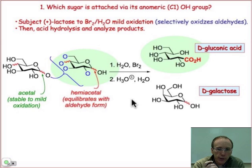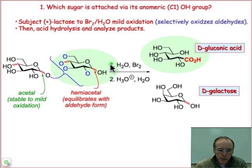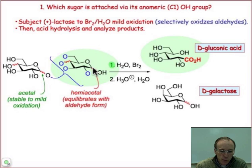Now we're ready to elucidate the structure of lactose, answering those three questions that were mentioned in the previous webcast, beginning with the question of which sugar is connected via its anomeric carbon to the other monosaccharide. The way we're going to answer this is with a two-step reaction sequence. The first step is a mild oxidation — it will react only with hemiacetals.